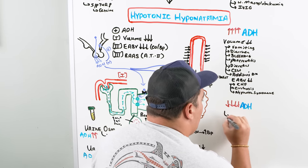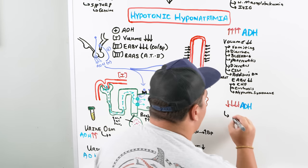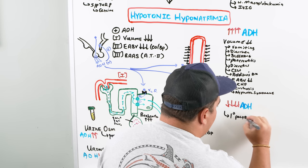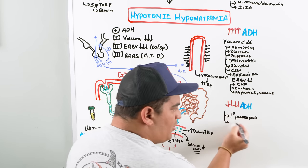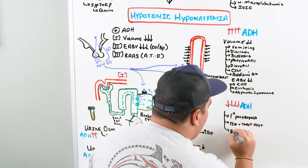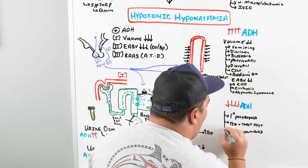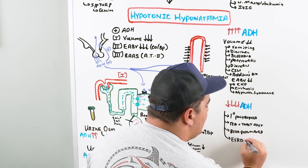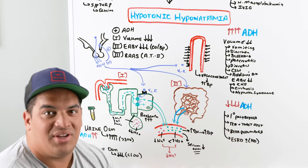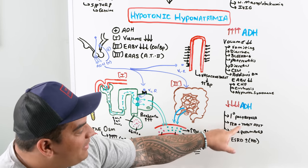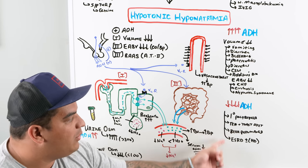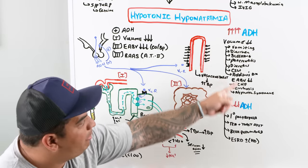The primary ADH-off causes include: primary polydipsia (also called psychogenic polydipsia), the tea and toast diet, beer potomania, and severe end-stage renal disease (likely on hemodialysis). These are relatively few causes, and you can often elucidate them from patient history. If ADH is low and urine osmolality is very low, think about these etiologies.